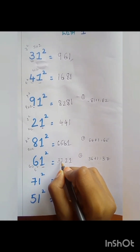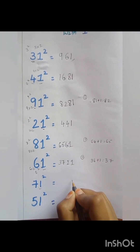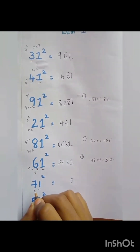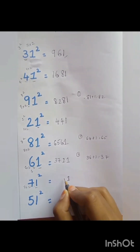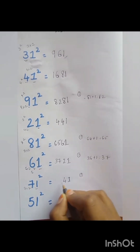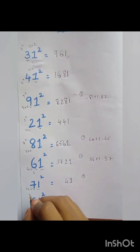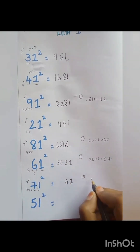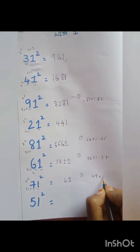Again, 71 squared. Unit digit is equal to 1. And 7 into 2 is equal to 14 — 1 shall be carried. 7 squared is equal to 49. 49 plus the carried number is equal to 50. Therefore 71 squared is equal to 5041.